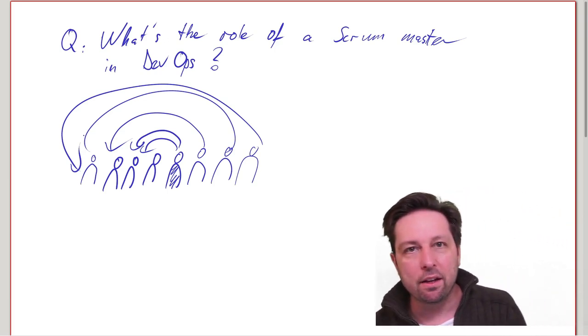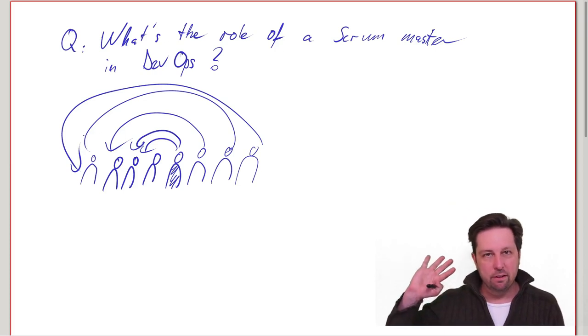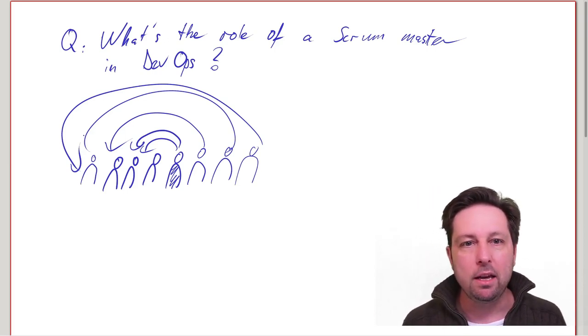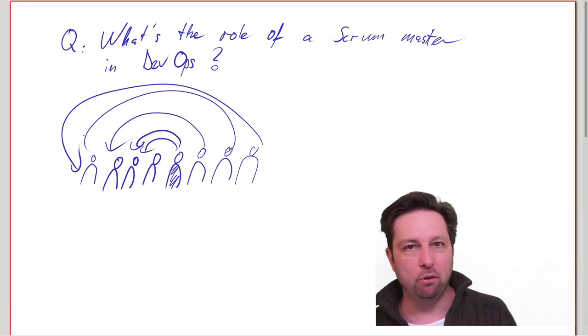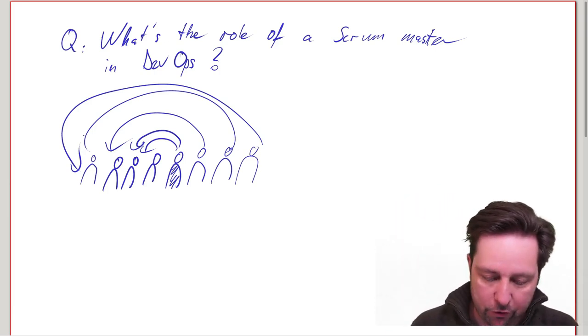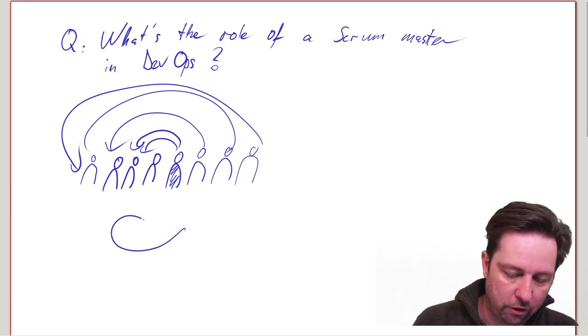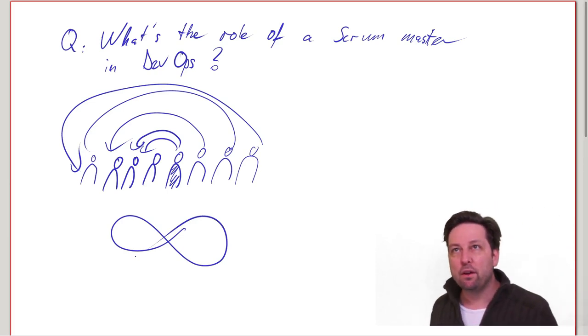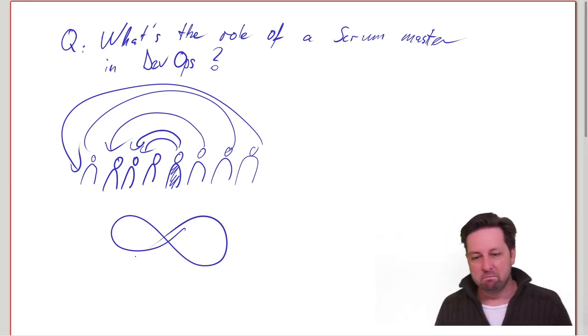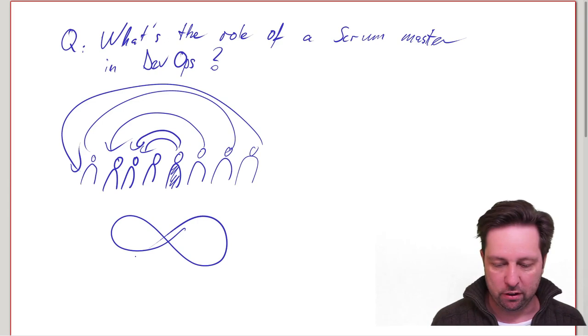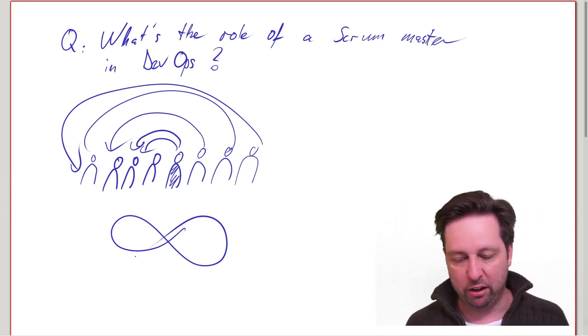And I think in that sense, Scrum Masters have become extremely important, extremely powerful as the guardians of the process. You know, there's this infinity figure drawing that is often used to express DevOps ideas.